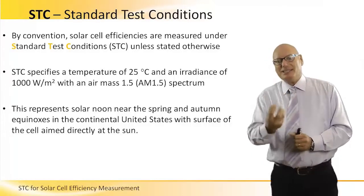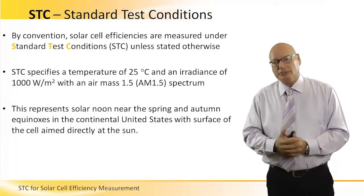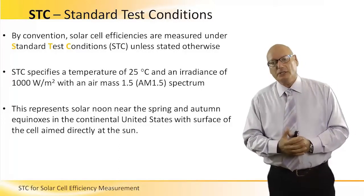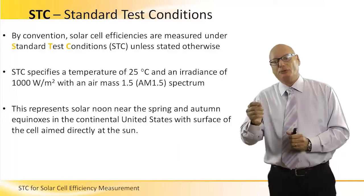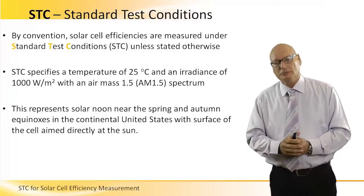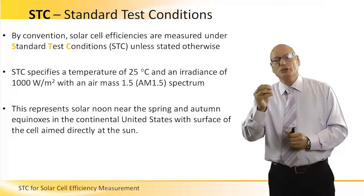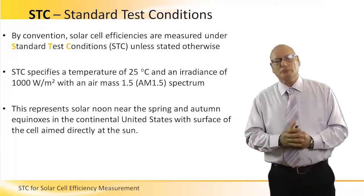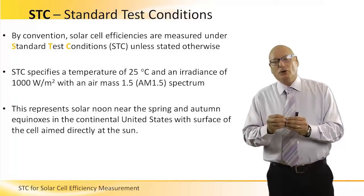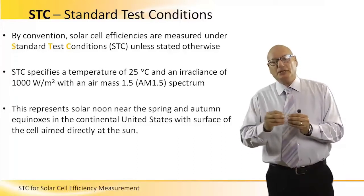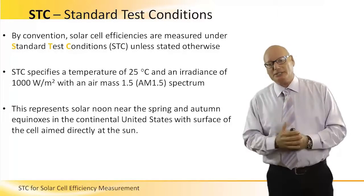The STC is based on a temperature of 25 degrees C and an irradiance of 1000 watts per square meter, with an air mass of 1.5. This represents solar noon near the spring and autumn equinoxes in the continental United States, with the cell aimed directly at the sun.